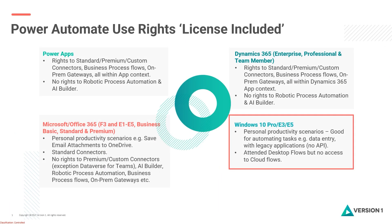An interesting one is the right to use limited Power Automate within Windows 10 Pro or a Windows E3 or E5 license. If you wanted to automate some data entry in conjunction with legacy applications that have no API, you have the ability to create attended desktop flows — but you have no access to any cloud flows like you would with other plans. There's quite a lot organisations could do within the context of Dynamics 365 and Power Apps, all within the app itself. But once you step outside that app context, or go beyond personal productivity use, you can't share those flows and you start to get into the realms of needing additional licensing.